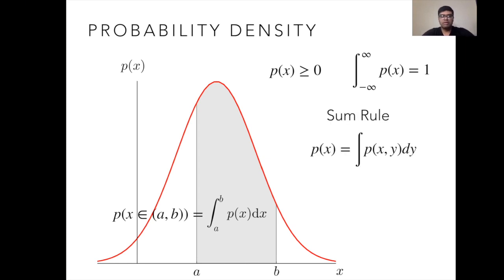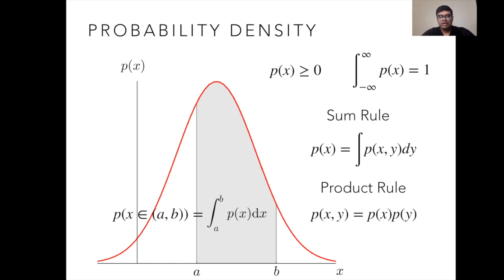Two most important results of probability theory are sum rule and product rule. The sum rule states that if you have a joint probability density over random variables x and y, then the marginal can be computed by integrating over a particular random variable. If you want to obtain probability of x from the joint probability density p(x,y), you just need to integrate over y — this removes all the variation due to y, leaving only x. The product rule states that if you have two independent random variables x and y, then the joint probability density is given as the product of the individual probability densities: p(x,y) = p(x) × p(y).